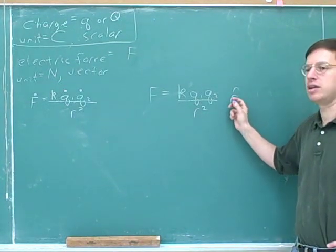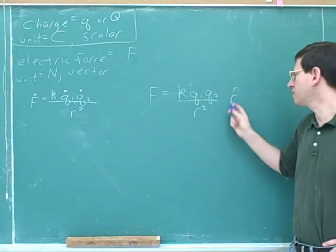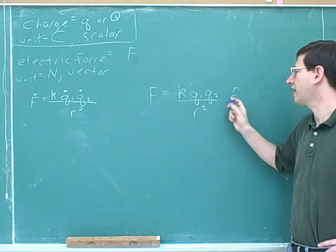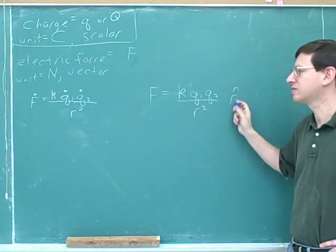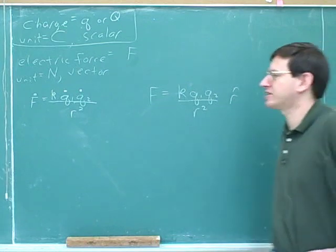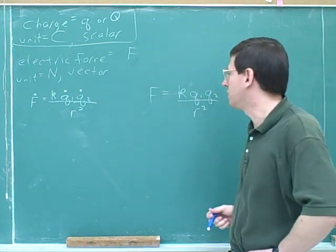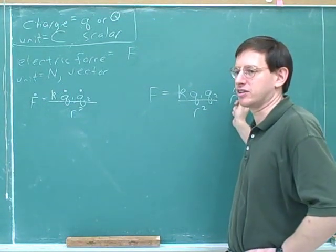r hat is just a unit vector that is pointing from charge one to charge two and its only purpose in this formula is to indicate what the direction of the force is. But we don't need a mathematical way to find the direction because it's just common sense what the direction is. Like charges repel and unlike charges attract. So there's never really much point to actually using r hat to solve something.